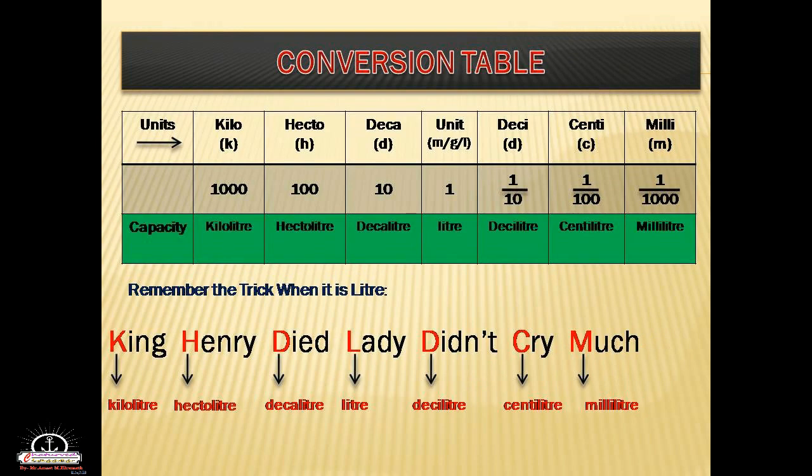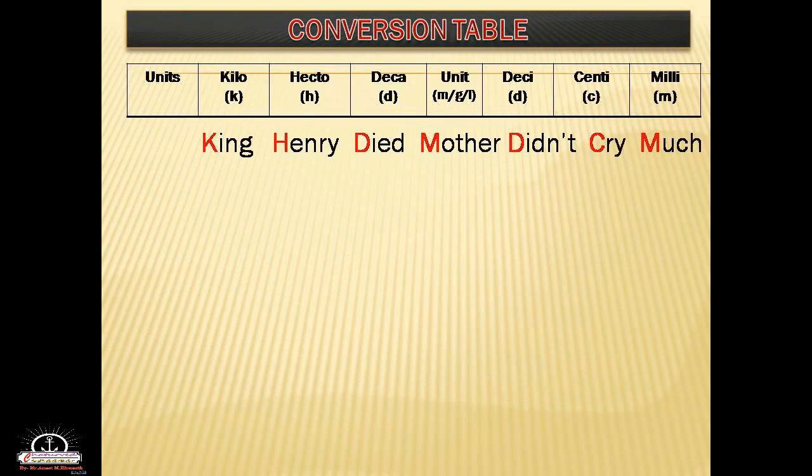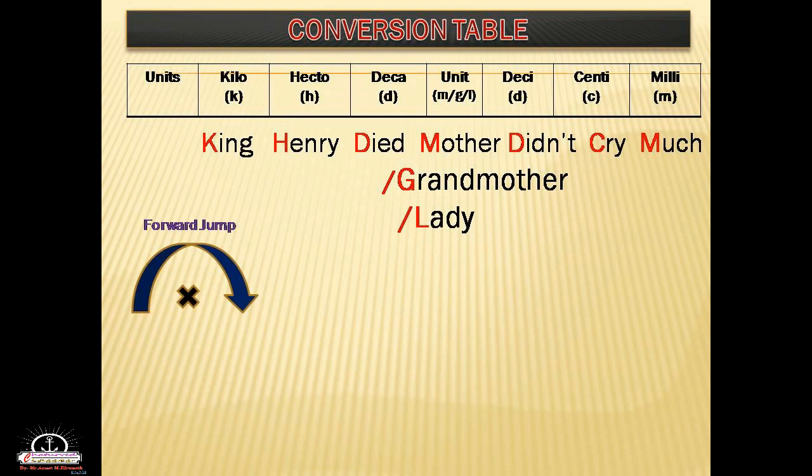So here, 'm' indicates meter — King Henry Died, Mother Did Not Cry Much. 'g' indicates gram — King Henry Died, Grandmother Did Not Cry Much. 'l' indicates liter — King Henry Died, Lady Did Not Cry Much. Hope everybody understood.